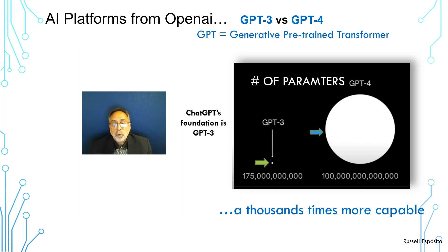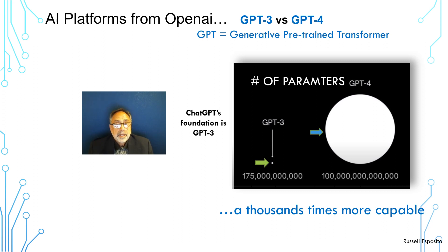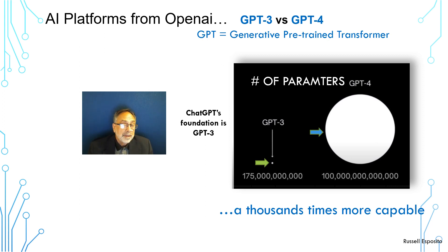By now I would think you've all used ChatGPT, or at least heard of it. ChatGPT's foundation is GPT-3, and there's another version, GPT-4, which is commercially available and much more capable. GPT stands for Generative Pre-trained Transformers. A transformer is essentially a set of programs that transforms data, collects data from large language models, and generates new information — new paragraphs. That's why it's called Generative.